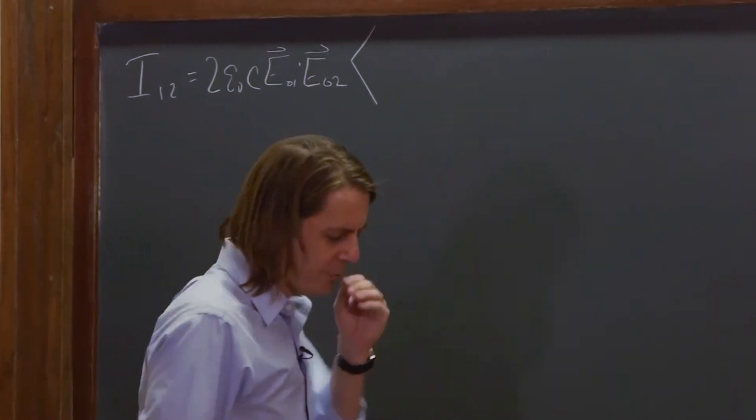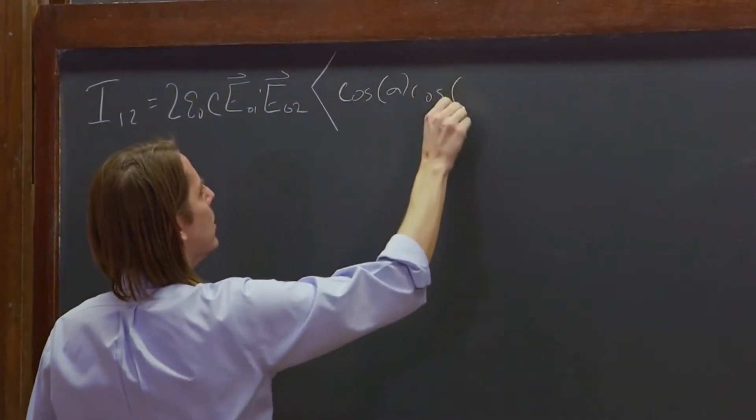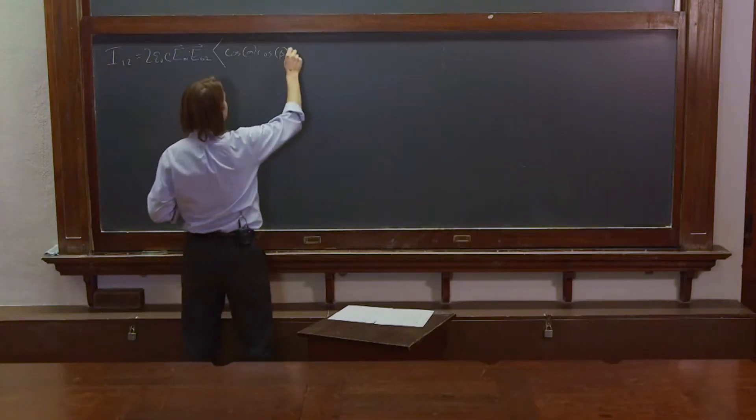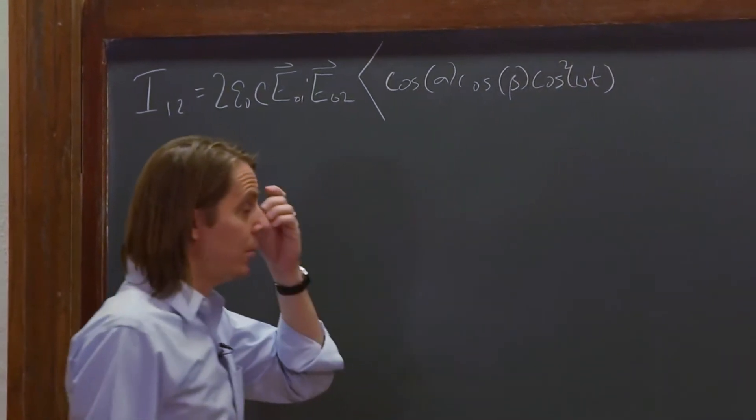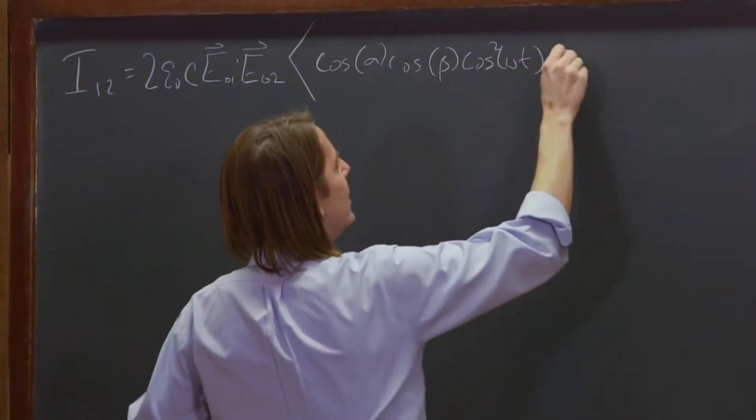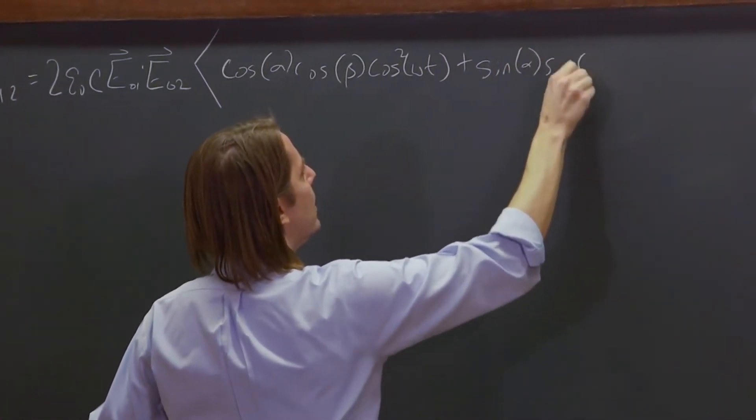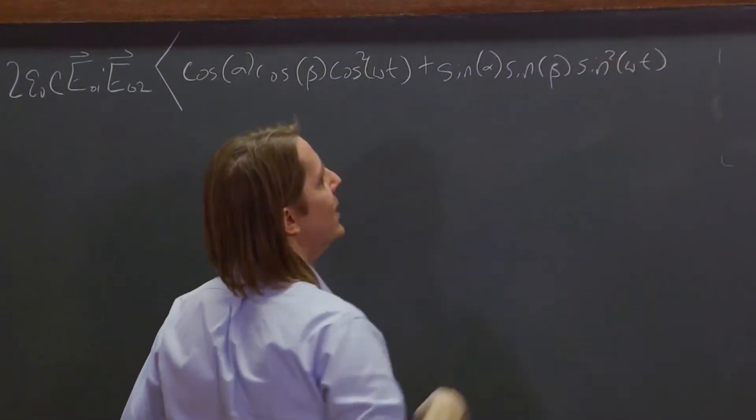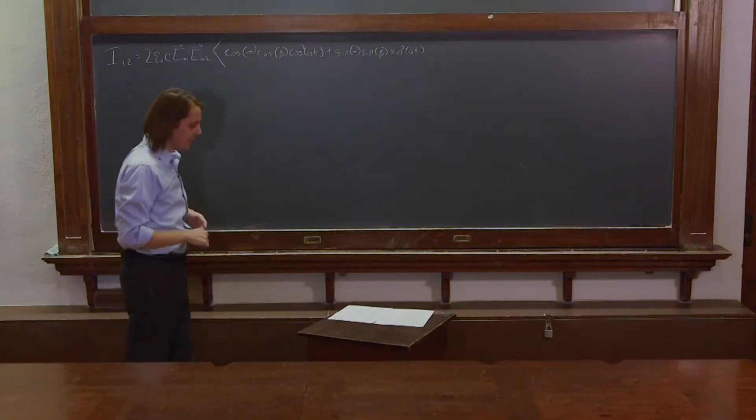So the first terms are cosine alpha, cosine beta, and those are times the cosine squared omega t. They each had their own omega t, so they're cosine squared omega t. And then the other term at the end would be sine alpha, sine beta, sine squared omega t. Each one of those had its own sine omega t, so it's sine squared omega t.